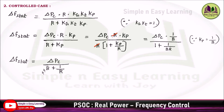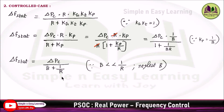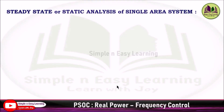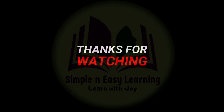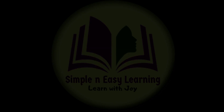With KP = 1/B where B is the damping coefficient, bringing B to the denominator gives B + 1/R. Since B is very small compared to 1/R, we neglect B, and the equation reduces to Δf_stat = R·ΔPC. In summary: for the uncontrolled case (ΔPC = 0), Δf_stat = −R·ΔPD; and for the controlled case (ΔPD = 0), Δf_stat = R·ΔPC.